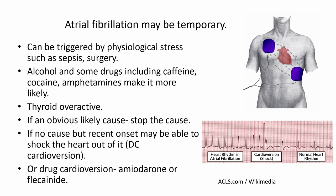Atrial fibrillation may be temporary. In older people, a big stress to the system — a severe infection like pneumonia or a big operation — may flip the heart into AF for a few days, after which it reverts as the body recovers. One of the key decisions in medicine is whether to treat it or protect the heart and wait to see if it goes back to normal. Several drugs including alcohol, caffeine, cocaine, and amphetamines make it more likely. A hyperactive thyroid or some valve diseases can also trigger it.